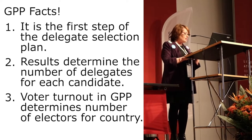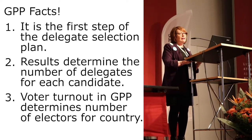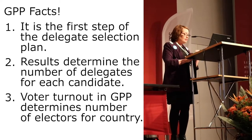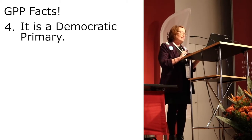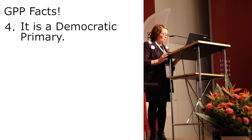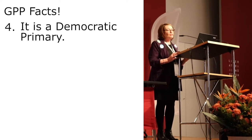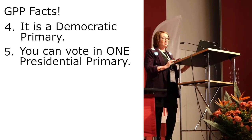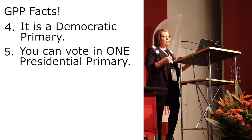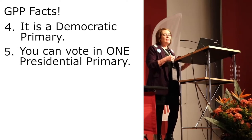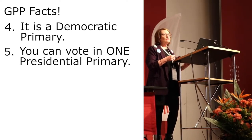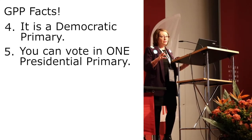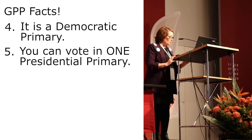There are lots of details in the delegate selection plan. A few important things: this is the U.S. Democratic presidential primary, and you can only vote in one. You cannot vote in both your state primary and the GPP for presidential candidate. If you vote in the GPP, you cannot vote for the presidential candidate in your state primary. You can vote for any other offices, just not the president.